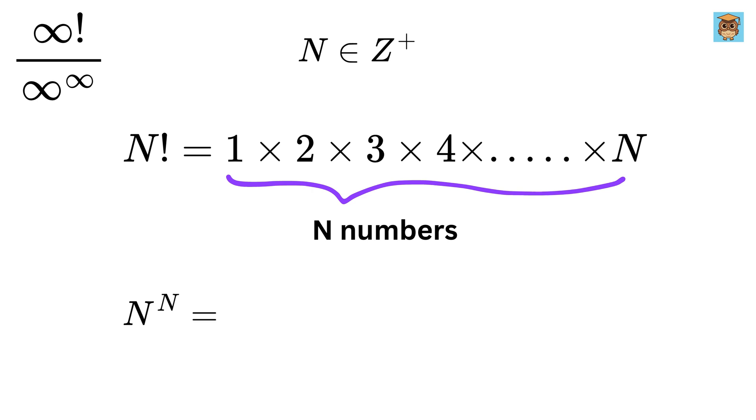Now we write n raised to the power n as n multiplied by n multiplied by n multiplied by n and so on up to n. So, these are also n numbers.